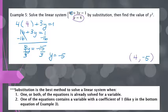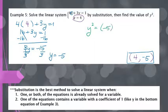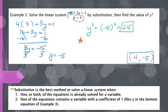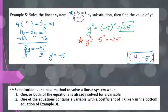So y equals negative 5, and the solution is the ordered pair 4, negative 5. The problem also asks for the value of y squared. That means I take my y value, negative 5, and square it: negative 5 times negative 5 equals positive 25. One caution: it would be easy to forget the parentheses when entering this into a calculator. Without parentheses, you'd get negative 25, which is incorrect. Always use parentheses when squaring a negative number.